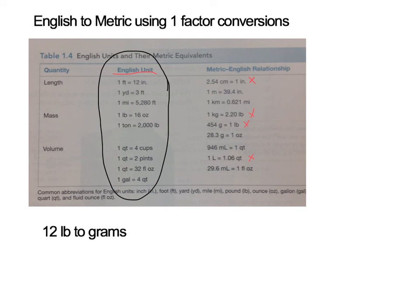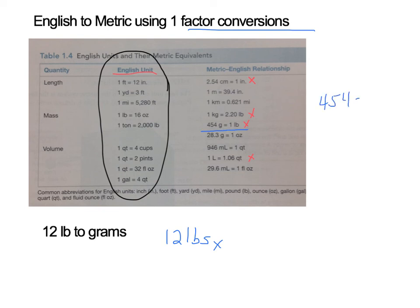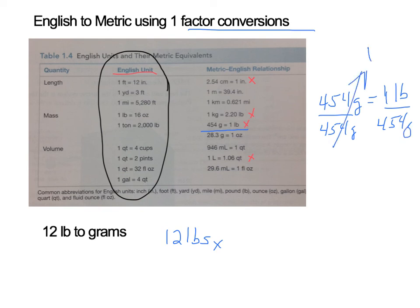Let's do the first example: 12 pounds to grams. I want to use a one-factor conversion. I'll write out what I'm given — 12 pounds — and multiply by a conversion factor. We want to get to grams, and there is a gram-to-pound conversion factor: 454 grams equals 1 pound. If I divide both sides by 454 grams, that side becomes 1. Alternatively, dividing both sides by 1 pound gives us two forms of the conversion factor.